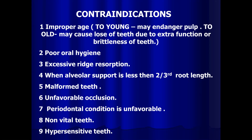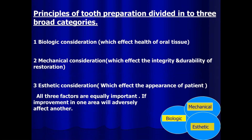Hypersensitivity occurs due to loss of enamel and dentin. When enamel and dentin are lost, the dentinal tubules become exposed, and there may be sensitivity to hot and cold stimuli. The principles of tooth preparation are divided into three broad categories: biological considerations, which affect the health of oral tissues; mechanical considerations, which affect the integrity and durability of the restoration; and aesthetic considerations, which affect the appearance of the patient. All three factors are equally important.